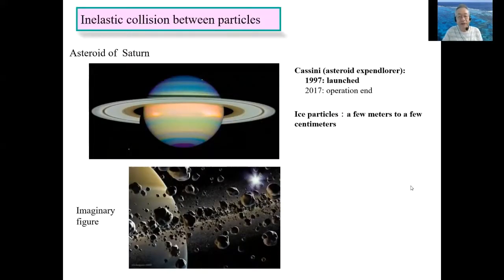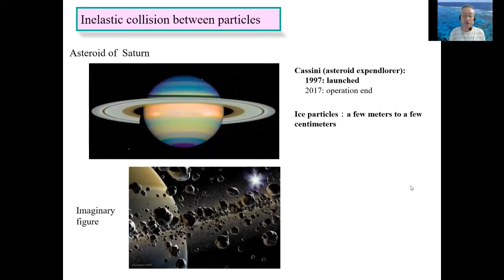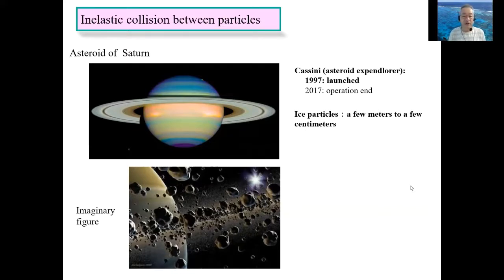In 1997, the US NASA and European Space Agency ESA launched a space probe named Cassini. Cassini sent many surprising images from space. The Saturn ring was previously thought to be one ring, but it was found that there are multiple rings. The mechanics that formed the asteroid ring became a hot topic in astrophysics, and the theory that elastic collision between particles drives ring formation began to emerge.